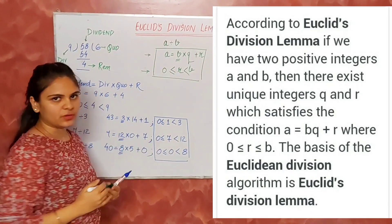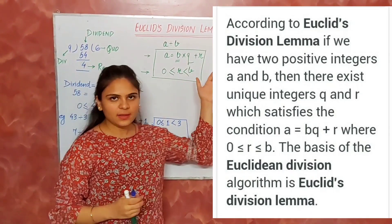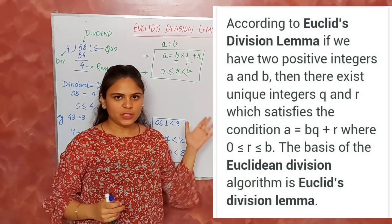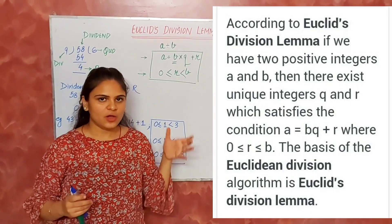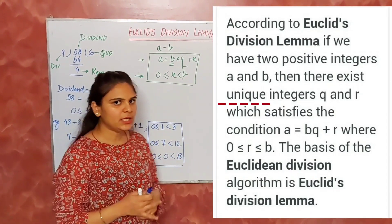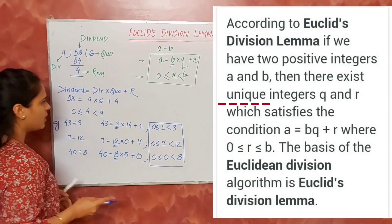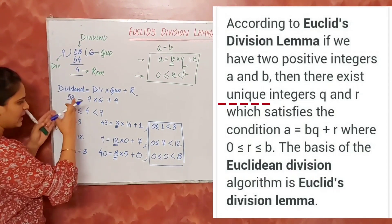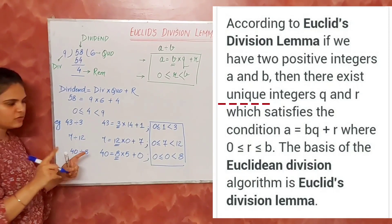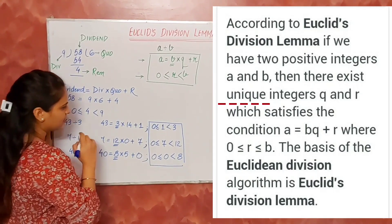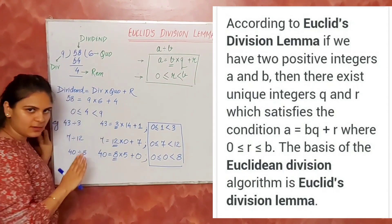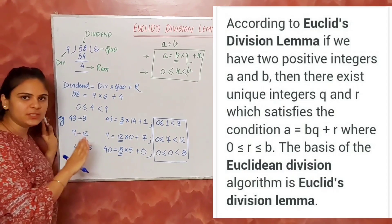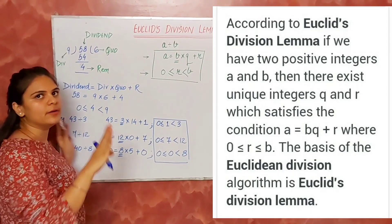In this statement you can see the word 'unique.' It says unique because for any division you will get one set of solution — in this case we are getting a unique quotient and remainder. Thank you.